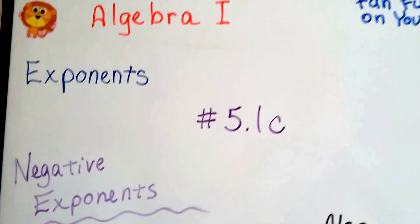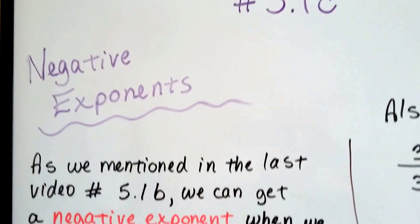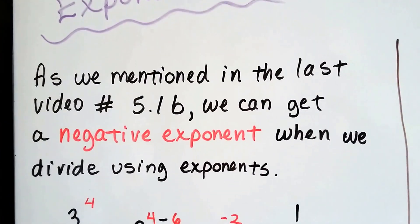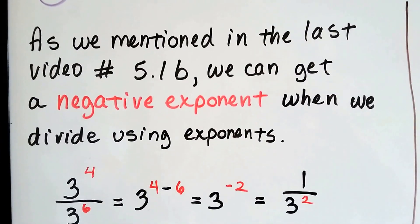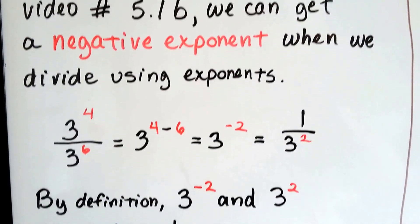Algebra 1 number 5.1c, we're talking negative exponents in this video. As we mentioned in the last video in 5.1b, we can get a negative exponent when we divide using exponents.